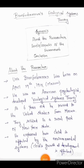Friends, welcome to our channel. In this topic we will cover Bronfenbrenner's Ecological Systems Theory. This is under childhood and growing up, Unit 3. The synopsis covers: the researcher background, levels or aspects of the environment, and finally the conclusion.